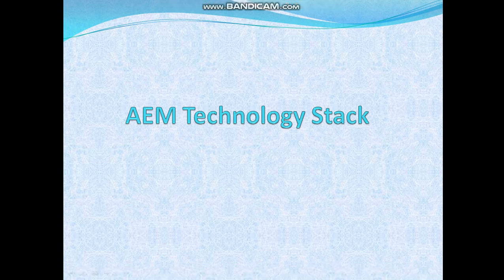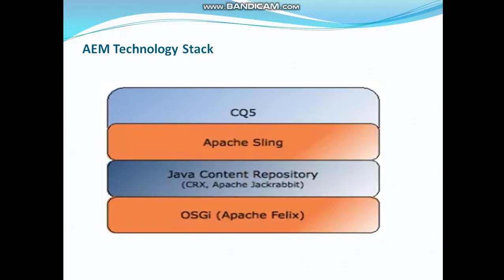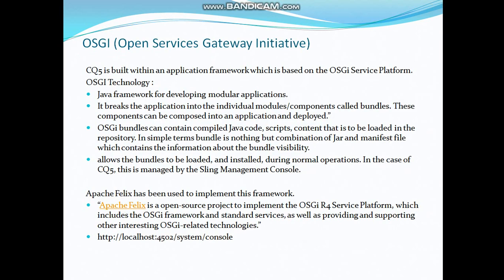Hello everyone, this is Vipin. In today's session I will walk you through the AEM technology stack — what are the major building blocks in AEM to develop any application. There are three major building blocks in AEM: the first one is OSGI (Open Service Gateway Initiative), the second one is JCR (Java Content Repository), and the third one is Apache Sling, a REST-based web framework.